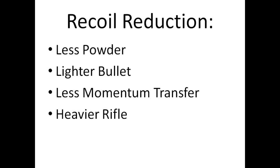There are a few things you can do to reduce recoil. The first is less powder — this is essentially the short mag versus regular mag concept, like the .300 Winchester Short Mag versus the .300 Winchester Mag. You get the same velocity but less powder, so a little less recoil. A lighter bullet also helps — less mass leaving the gun means less coming back at you.